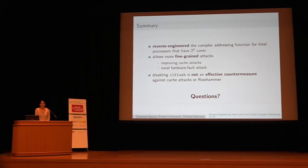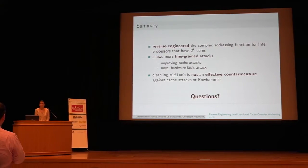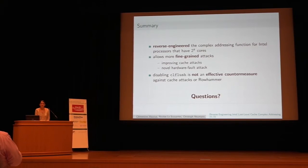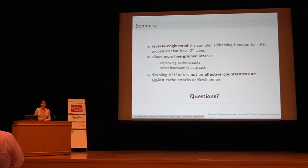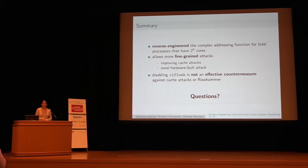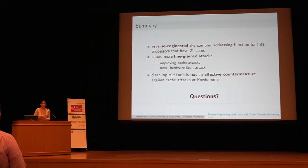We have time for questions. An audience member asks: do you have thoughts on countermeasures — for example, adding randomness to how the hash function works and routes addresses to different slices? The speaker clarifies: change the function itself as a countermeasure? The questioner confirms: or add something that prevents offline reversal of the function. The speaker responds: adding randomness is tricky because the function must be deterministic for the processor to retrieve cache lines correctly.